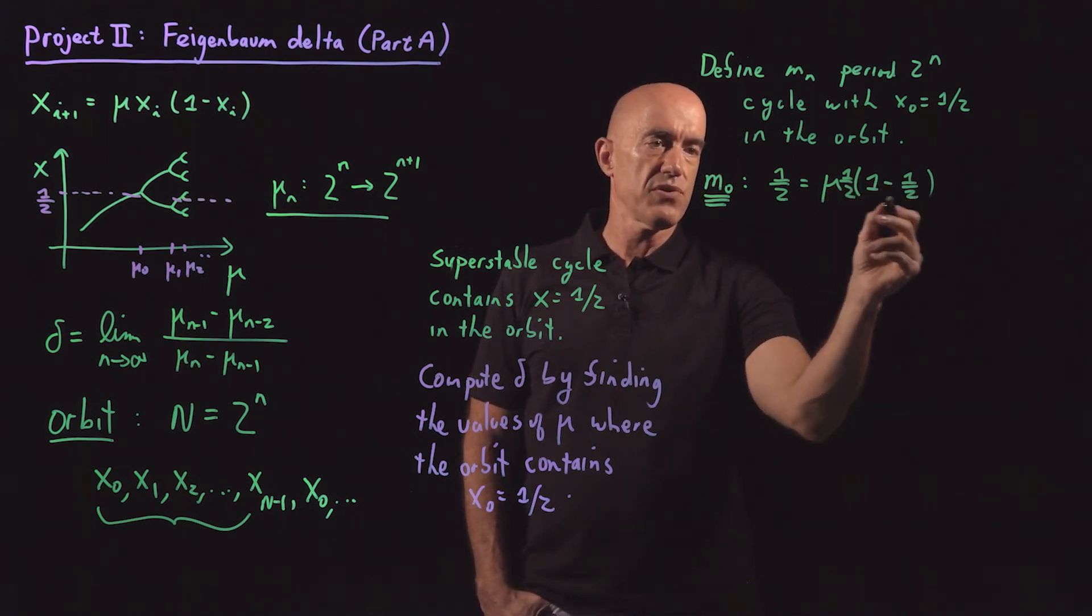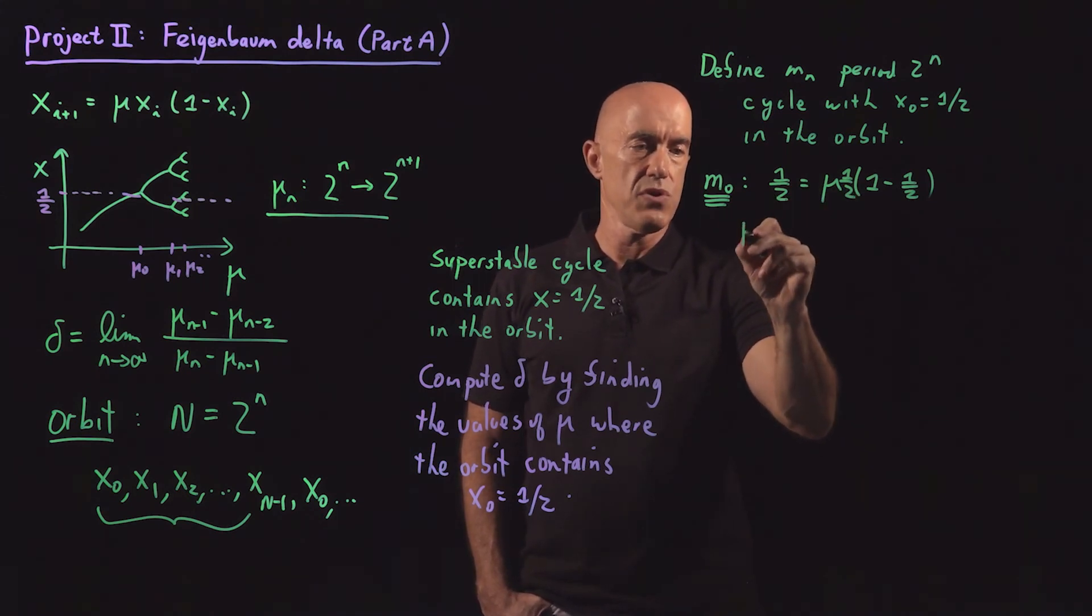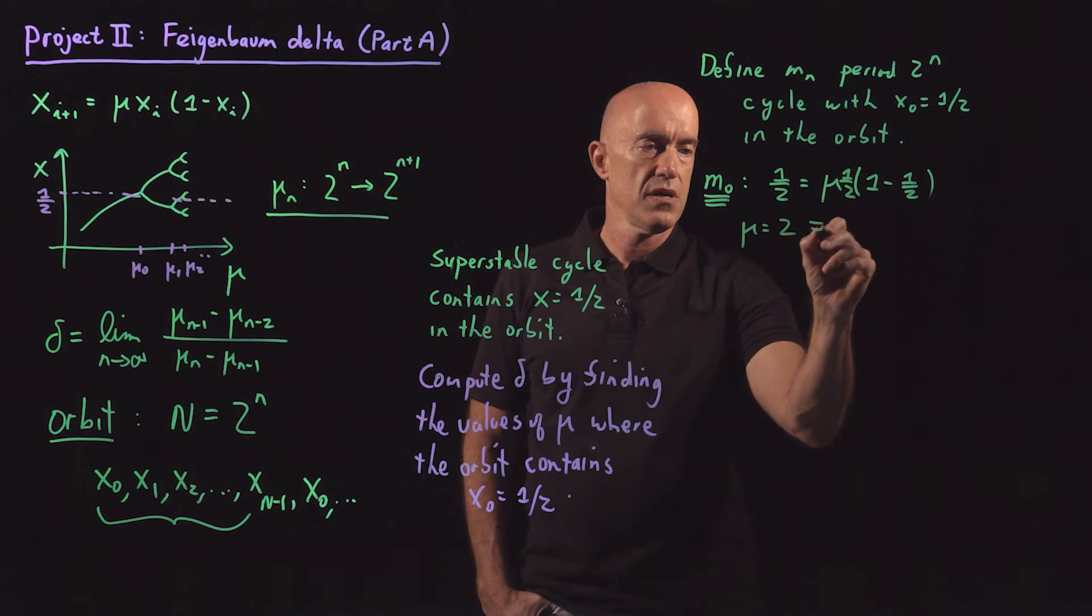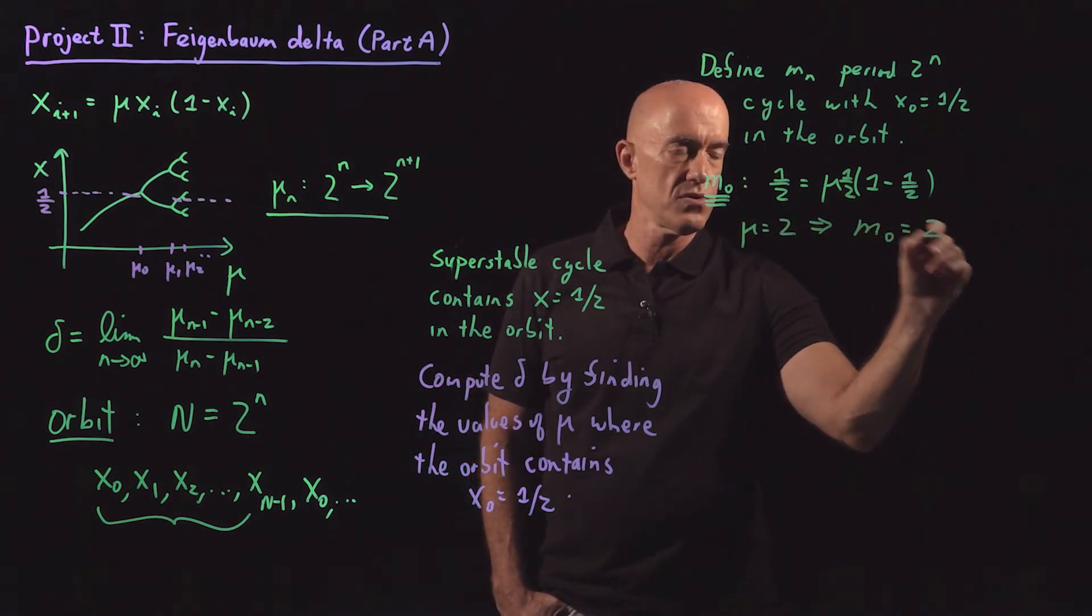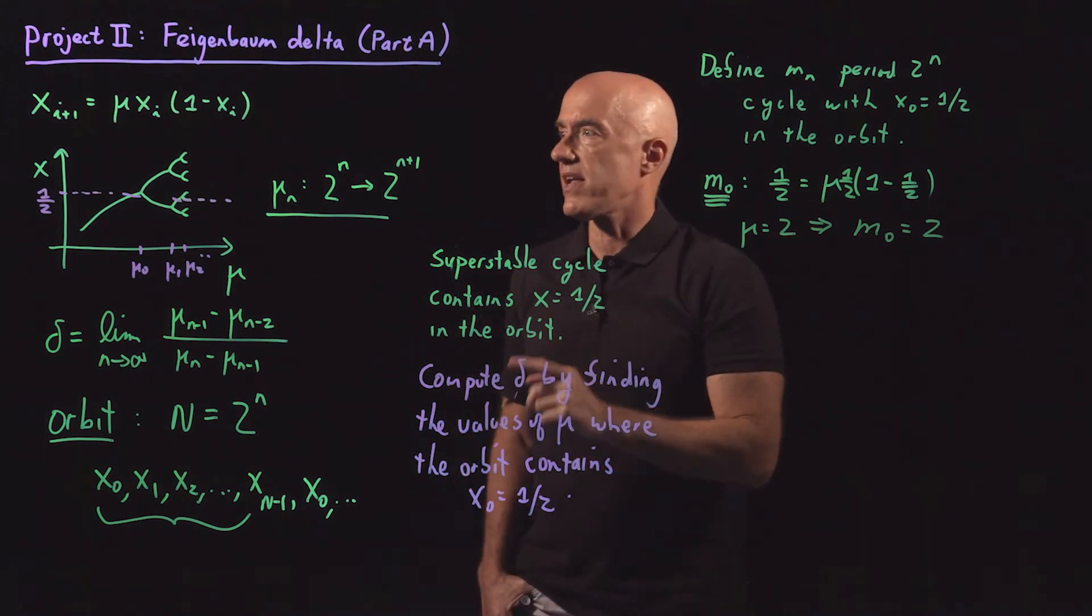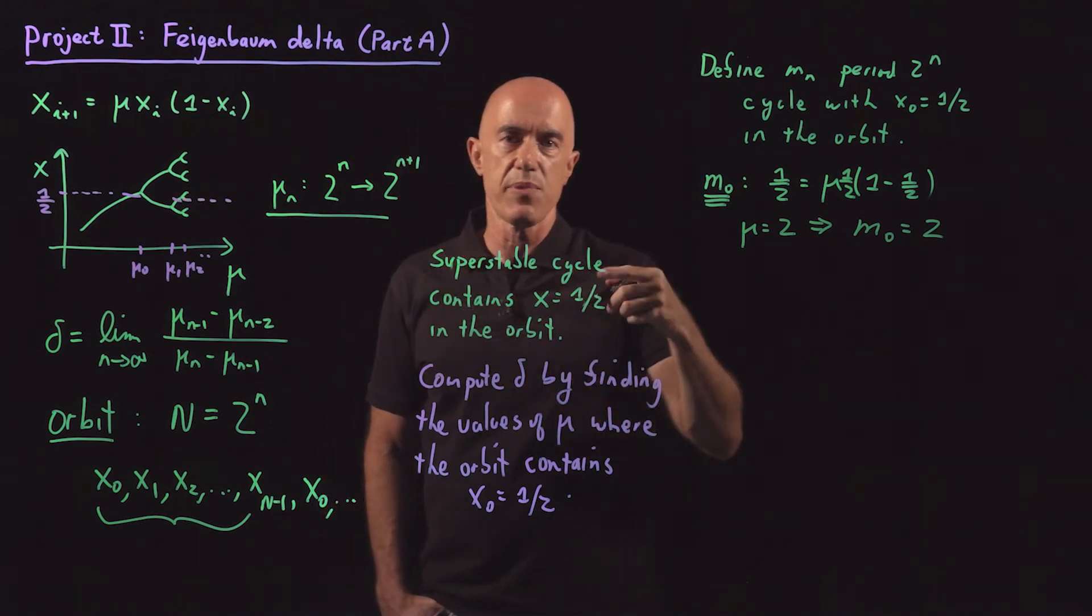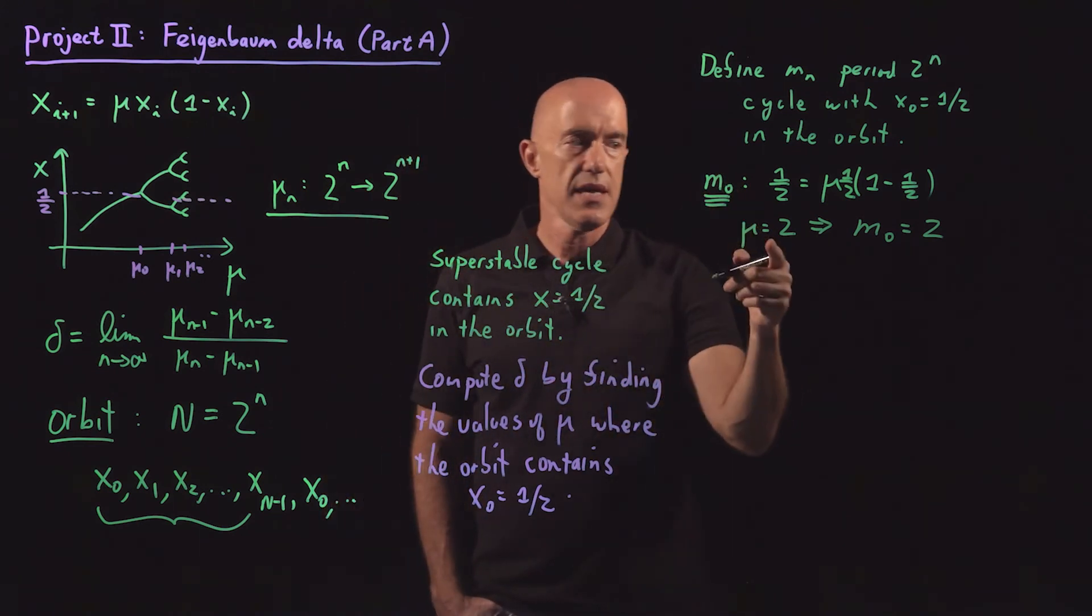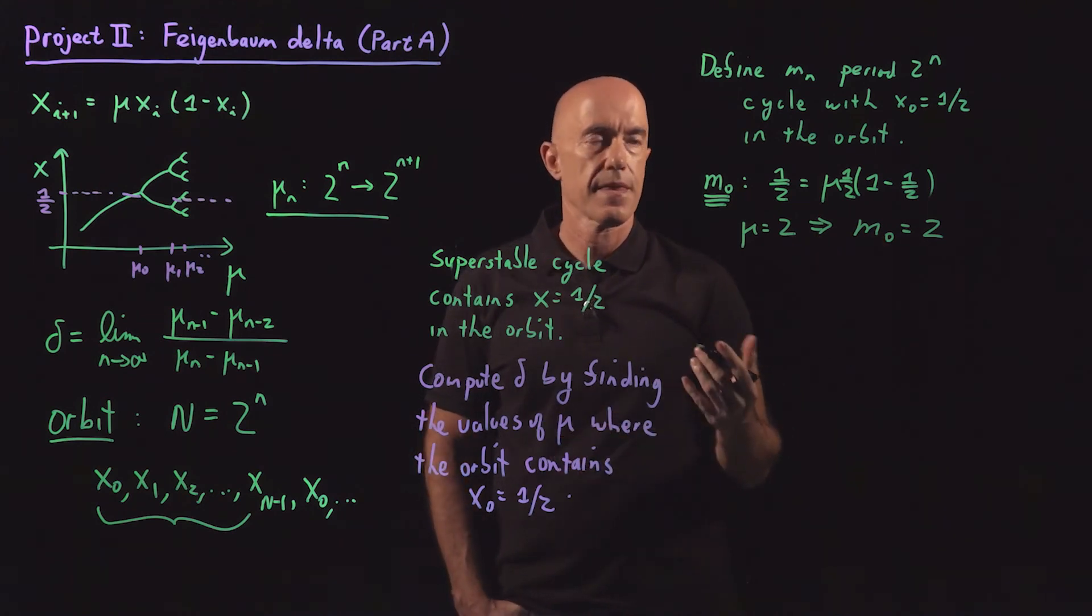You multiply both sides by four, and we solve for mu. So we get mu is equal to two, which tells us that our m naught is equal to two. So the first value of mu, the first super stable cycle for the period one solution is mu equal to two. So m naught equals two.